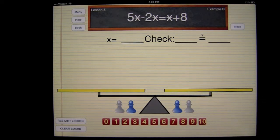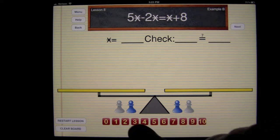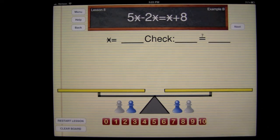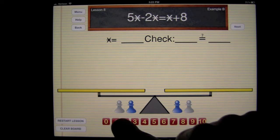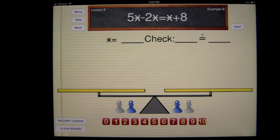Now, you can see here we have 5 star minus 2 star equals star plus 8. The star is a symbol, and you can see we have the blue pawn, which is going to represent X, and in this hands-on equations 2, we are introduced to the white pawn, which is the star. We also have our numbers here.